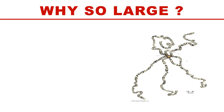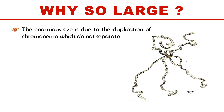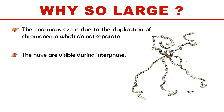Why are these chromosomes so large in size? These chromosomes are large because they just duplicate but they do not separate. As a result they become large, and these chromosomes are visible in the interphase. Normally chromosomes are best visible in the metaphase stage, but polytene chromosomes can be visible in the interphase due to their large size.